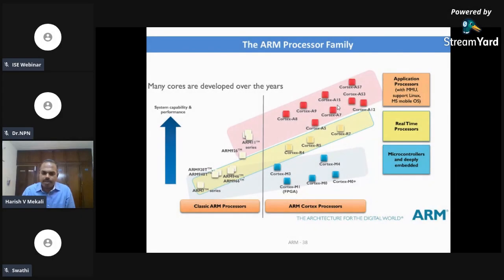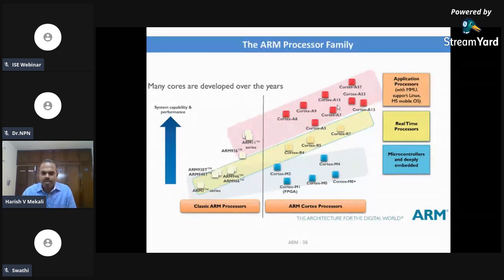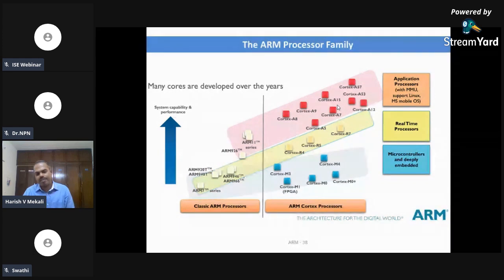Now, we will look into what are the types of ARM processors that we have. ARM processors designed till now can be classified into two types: Classical ARM processors and Cortex ARM processors.